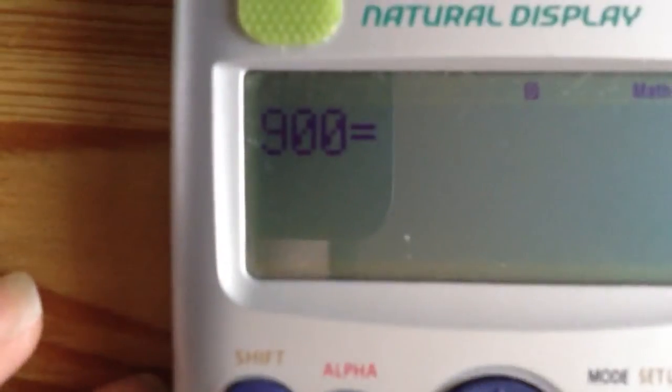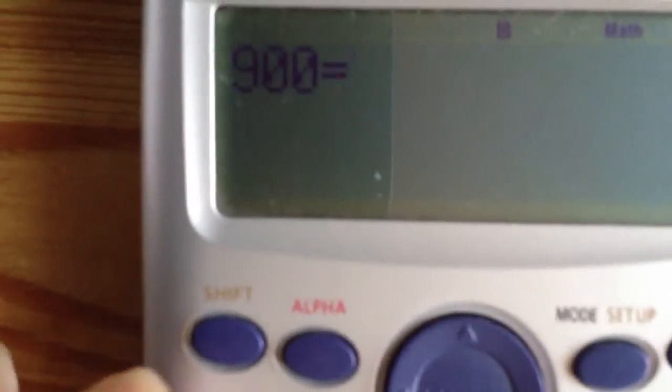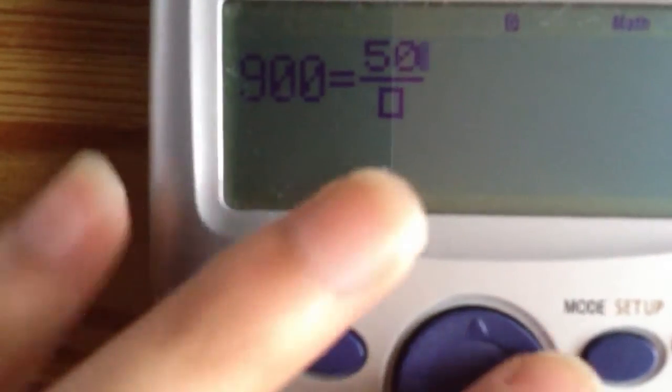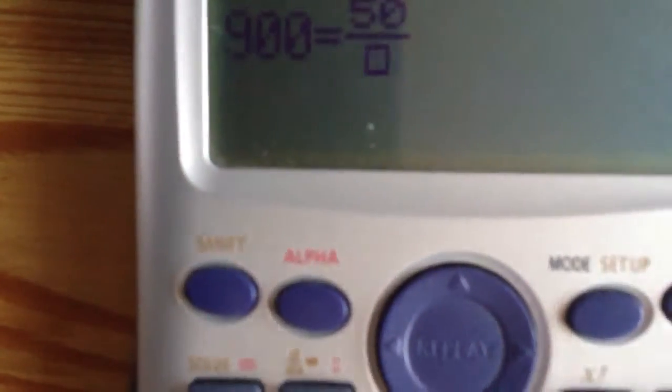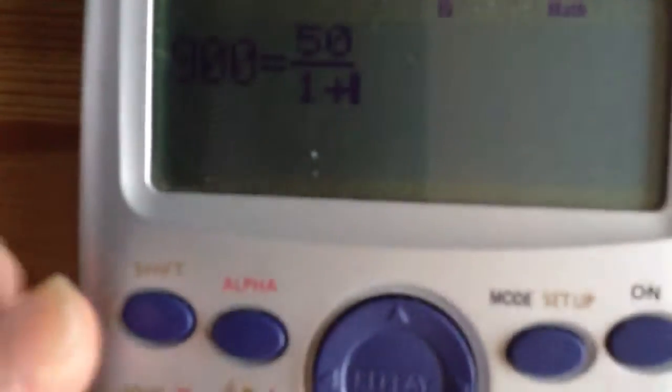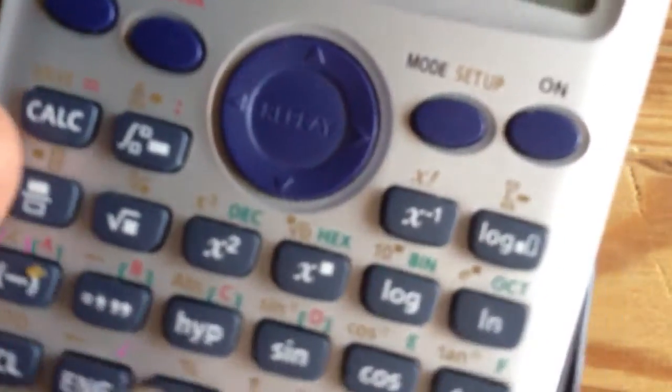So you press alpha calc, out comes an equal sign. Then you press 950 and divide by 1 plus, and to type in y. I'm going to use x but y is right next to it.